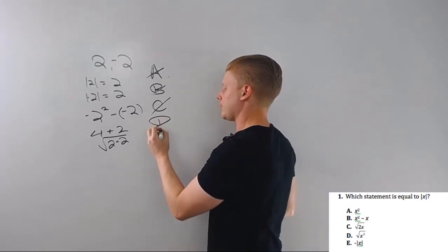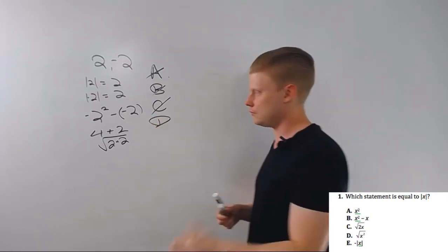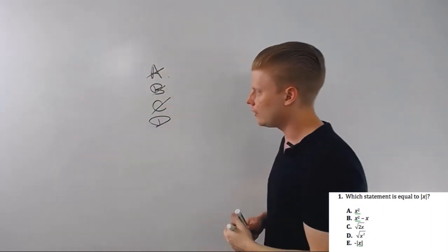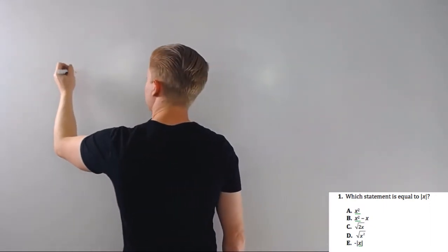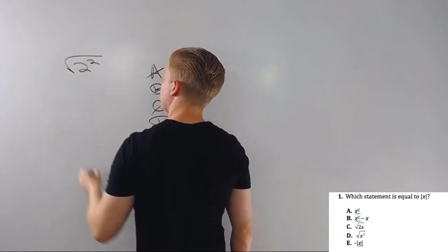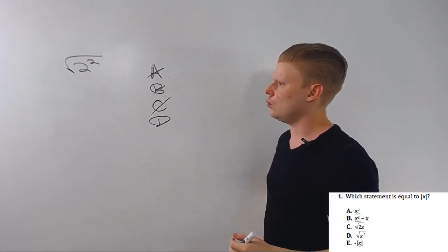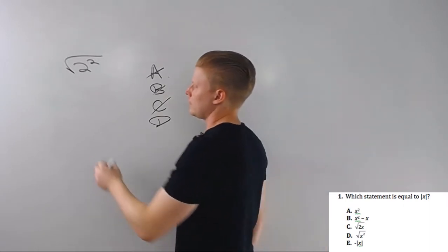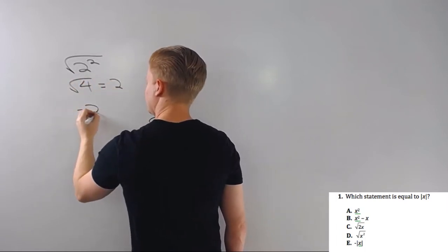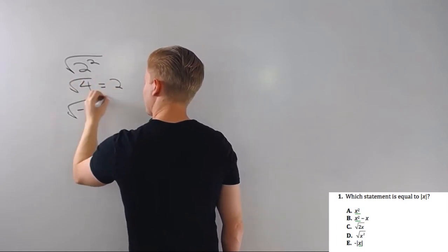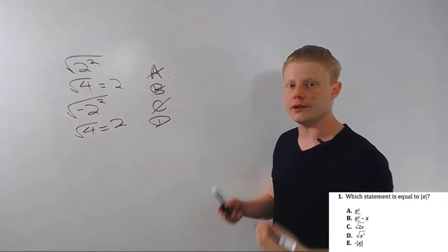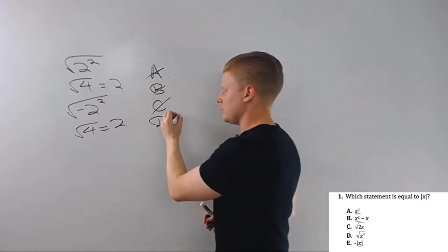That would actually be two i. Check out complex numbers for more on that. That's not even a real number, so that's out. The square root of x squared. Okay, square root of x squared. We got two and negative two.